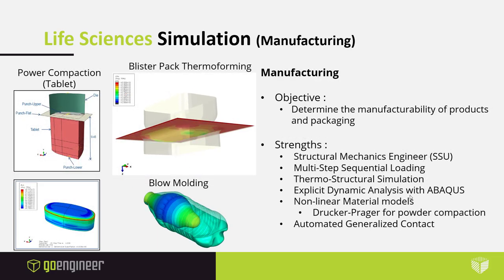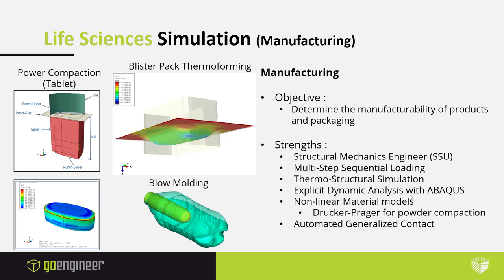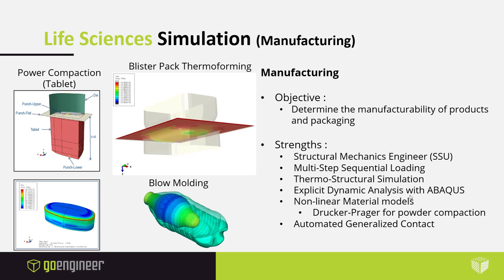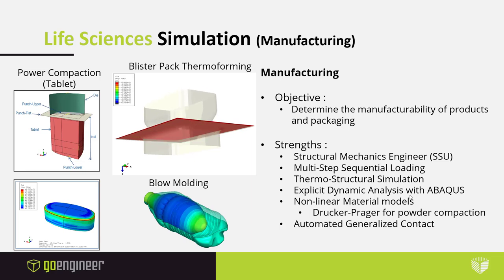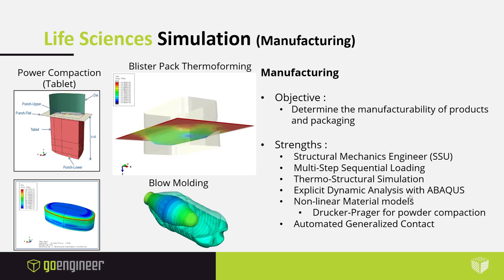Manufacturing is another area that uses simulation extensively, though it's not often spoken about because it doesn't seem very obvious. Challenges include the multi-step nature of manufacturing processes involving complex materials and thermal analysis. For instance, in a blister pack thermal forming process, the film is heated and then a die creates the final blister pack shape. Another interesting application used by pharmaceutical industries is powder compaction for manufacturing tablets, using the Drucker-Prager model to characterize the powder-like nature of the tablet and simulate the compaction process using structural analysis tools in Simulia.